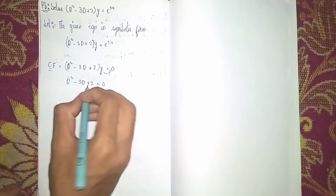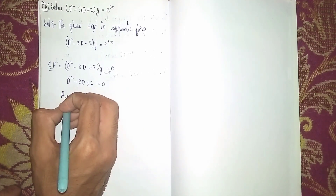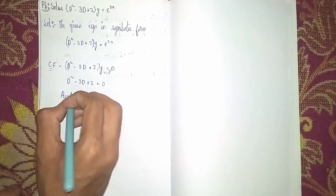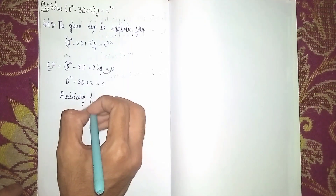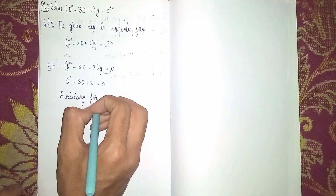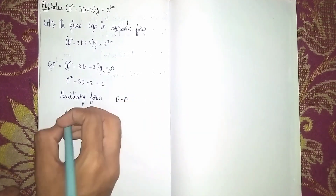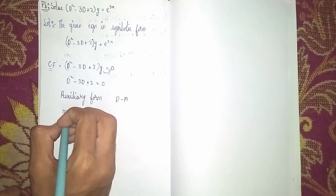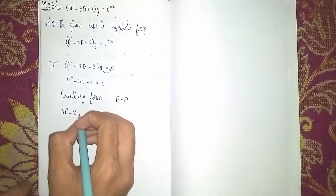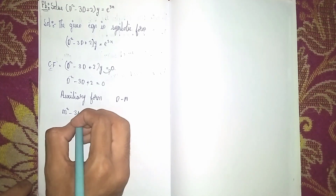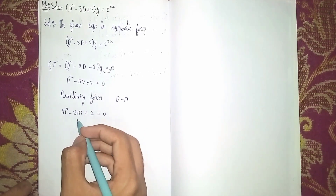Now write this equation in auxiliary form to find the roots. In auxiliary form, instead of D we write m — we do this to find the roots. So it becomes: m² - 3m + 2 = 0.